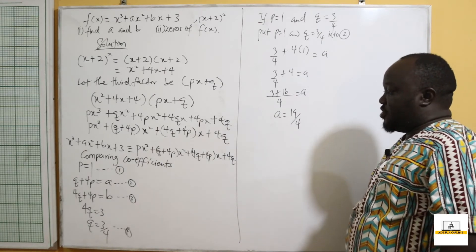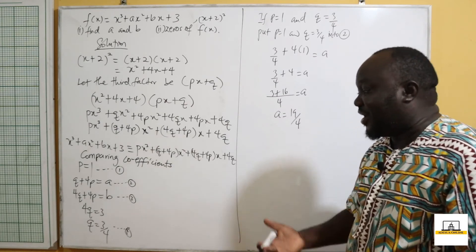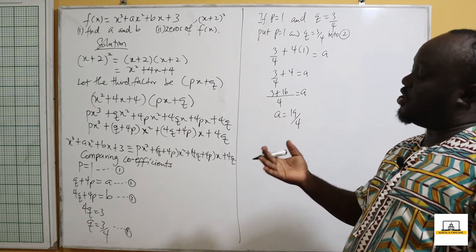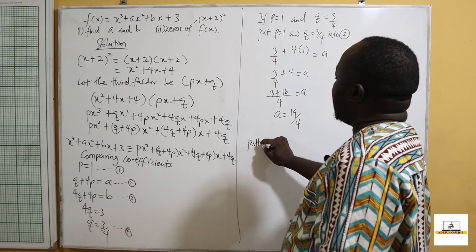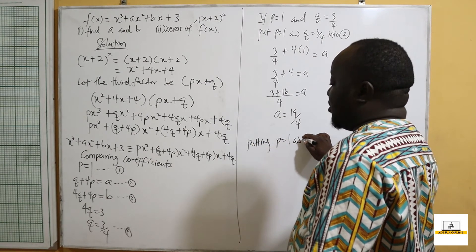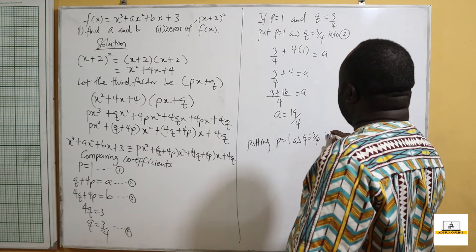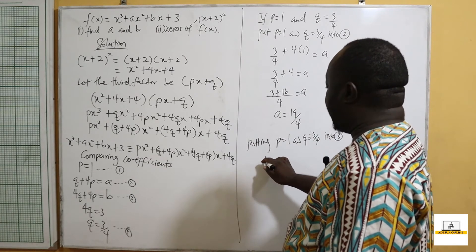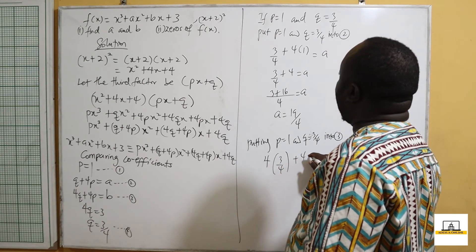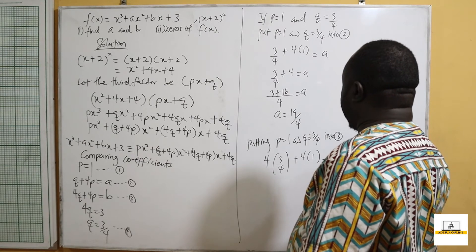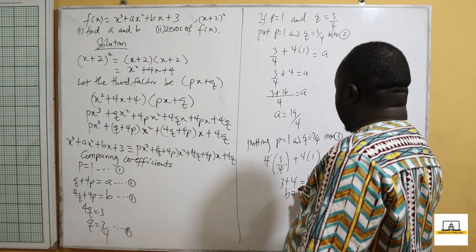Now we can also put p equals 1 and q equals 3 over 4 into equation 3 to get the value of b. Since b equals 4q plus 4p: 4 times 3 over 4 plus 4 times 1 — the 4 cancels — we shall have 3 plus 4 equals b. So b is equal to 7.